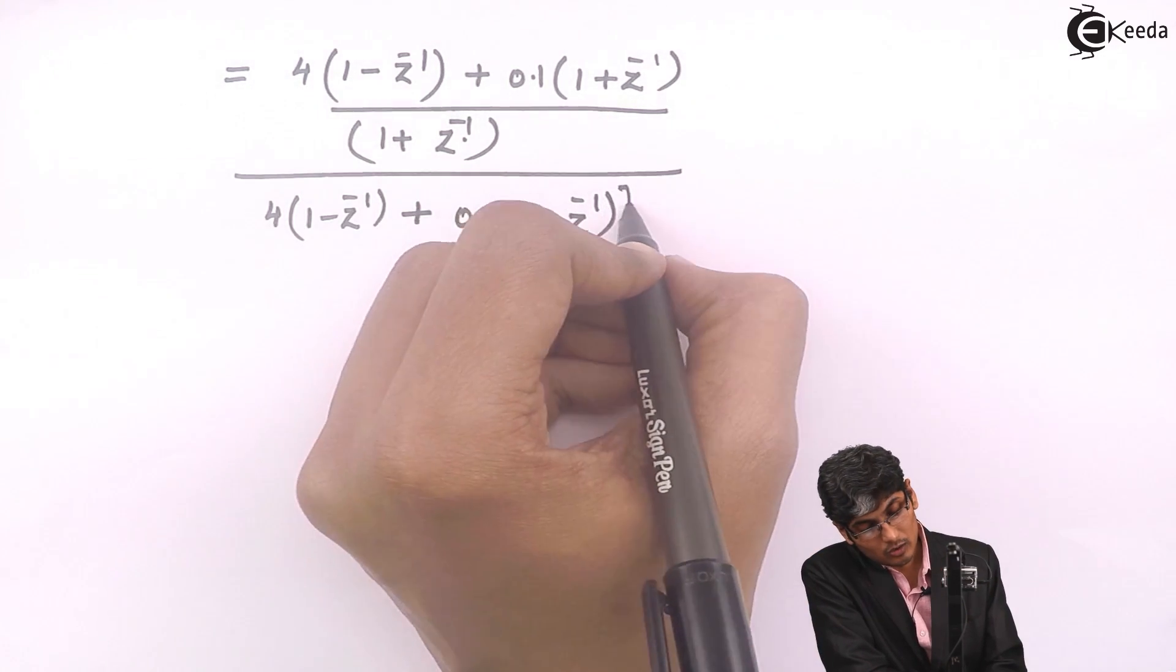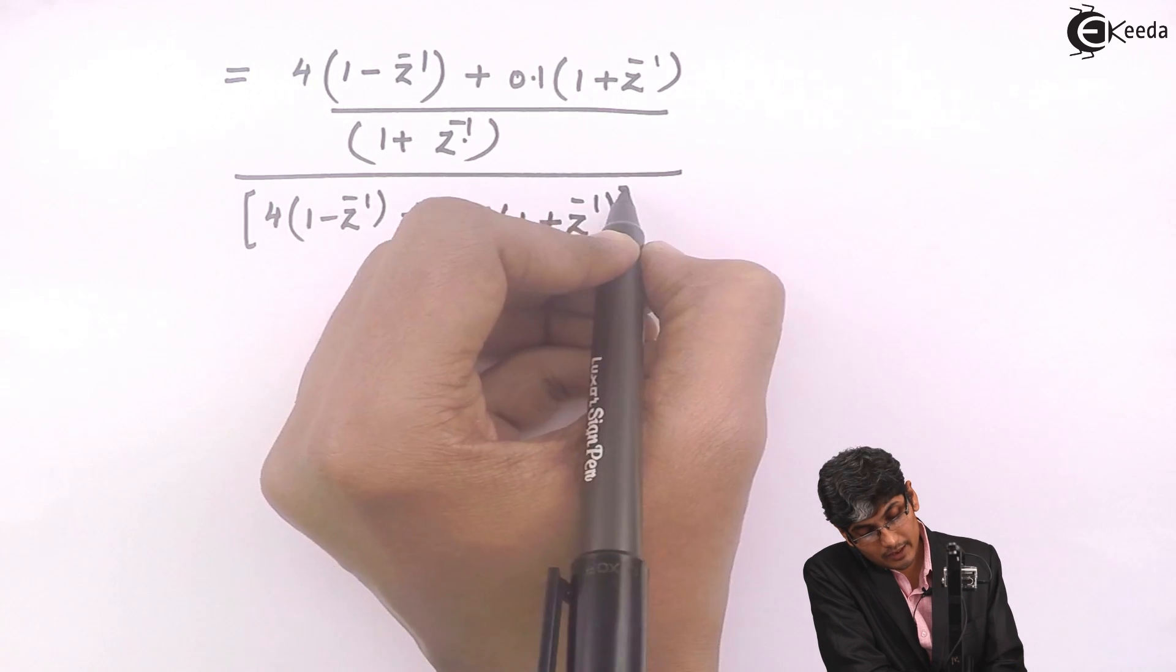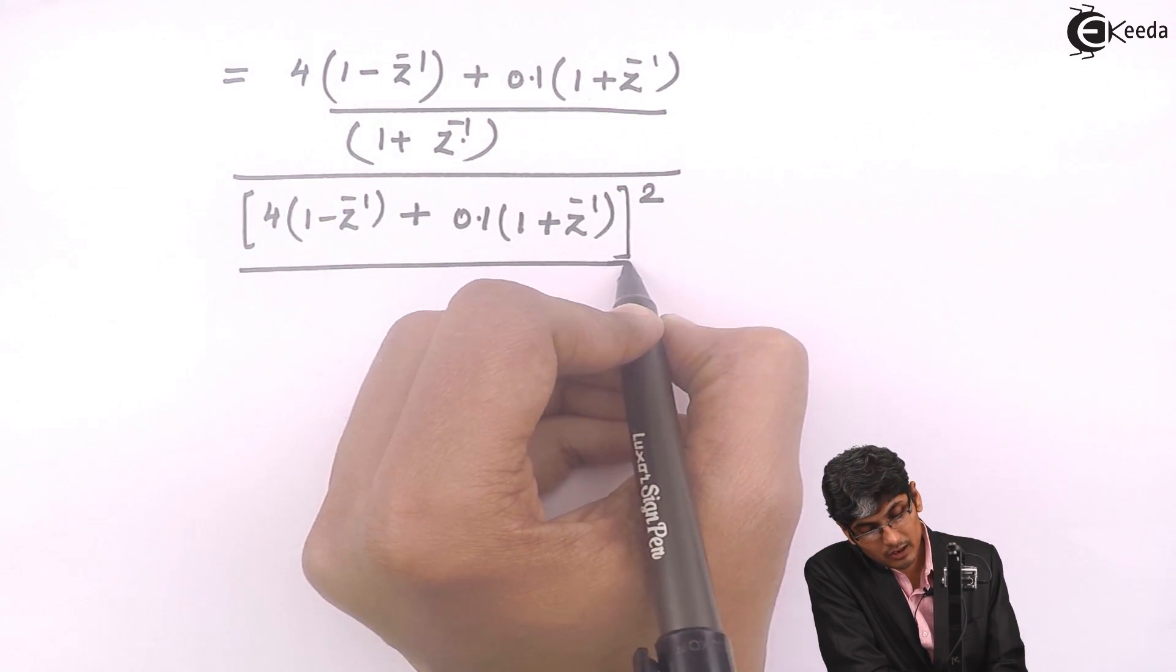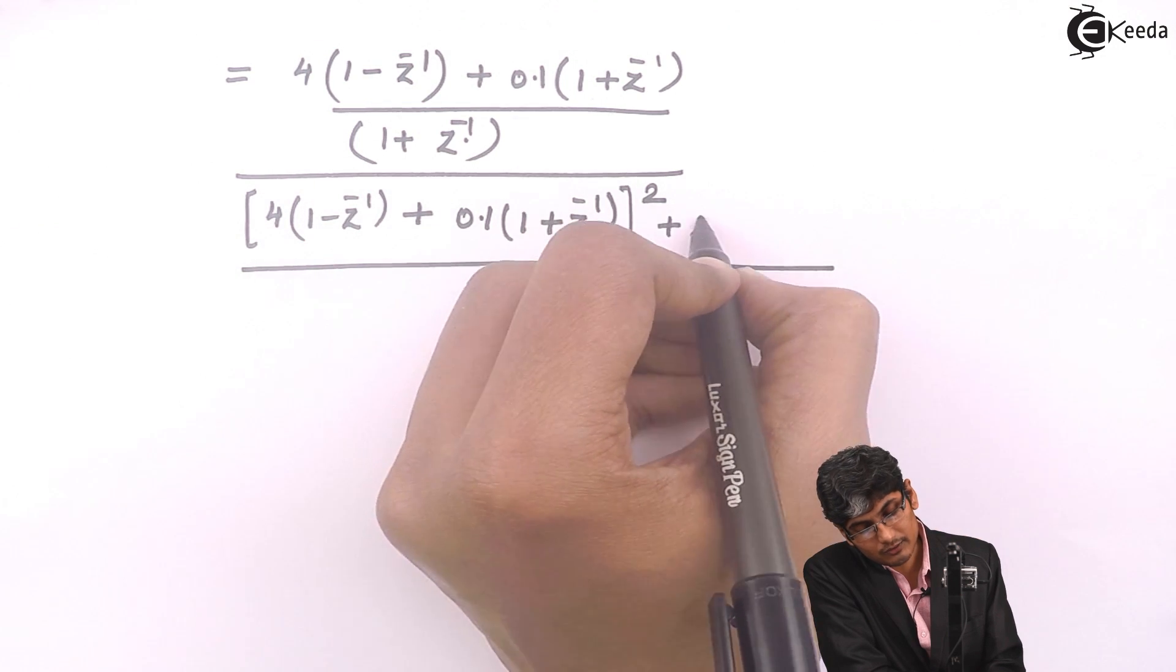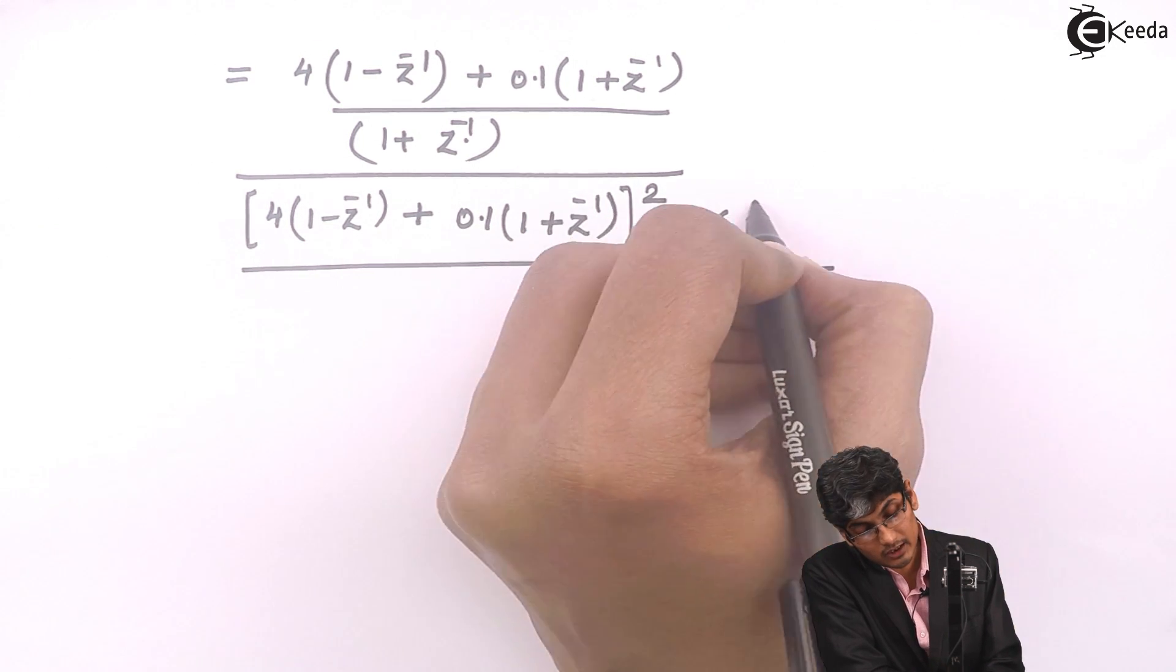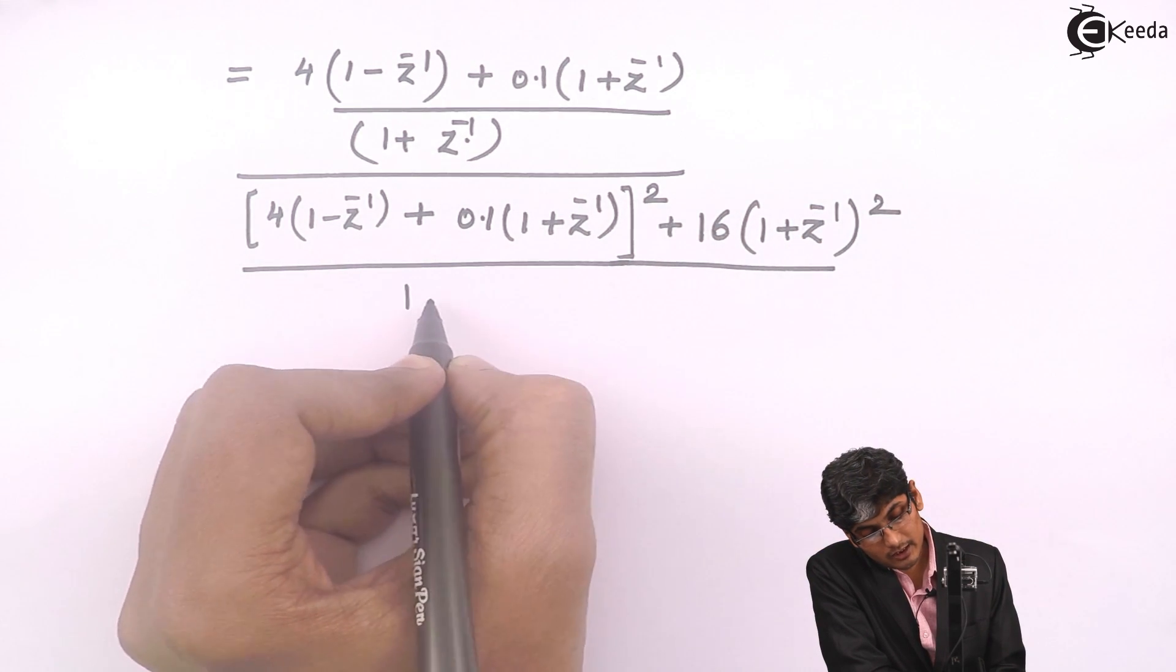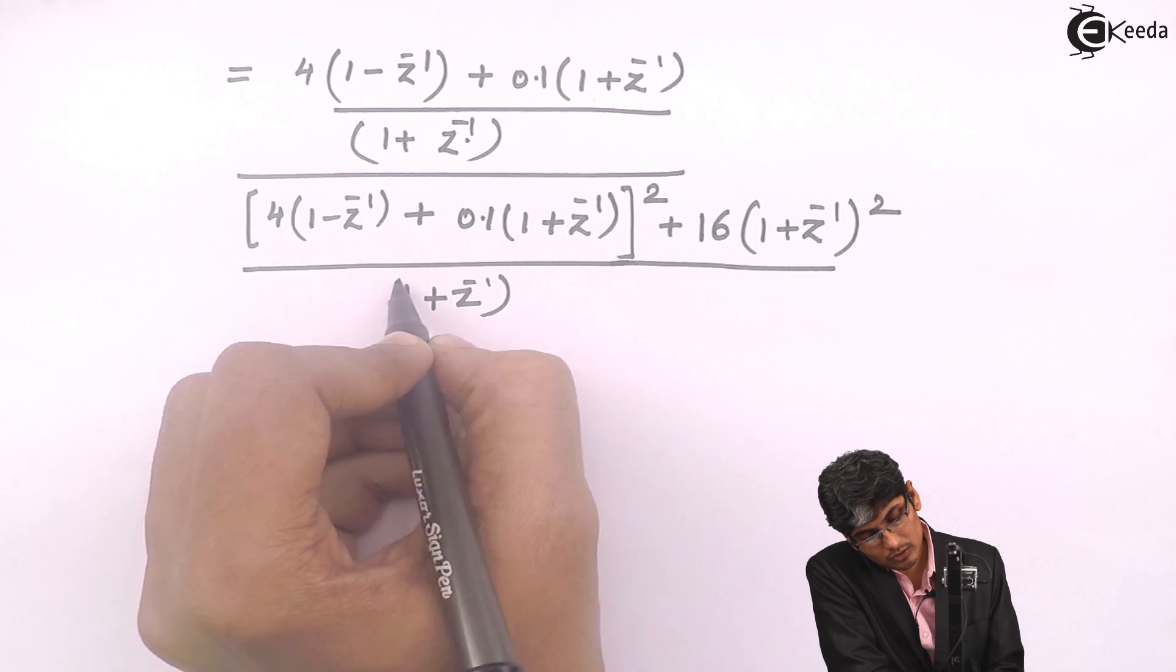The whole square divided by, let us make it the whole divided by, because I have 16 over here so I will put plus 16 into 1 plus Z inverse the whole square and I will write it as 1 plus Z inverse the whole square.